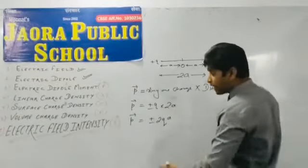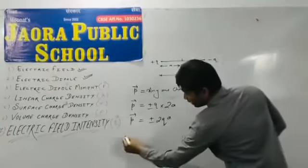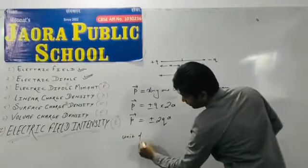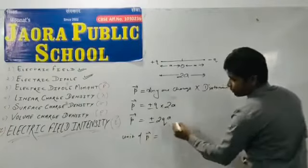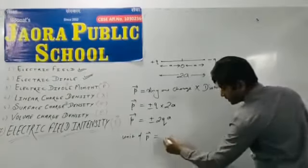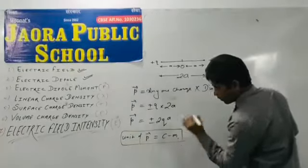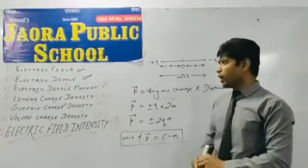Friends, electric dipole moment is vector quantity. And the unit of electric dipole moment is product of unit of charge and distance. Coulomb meter. Okay, friends?